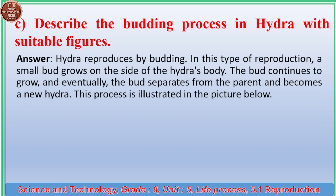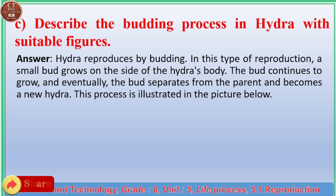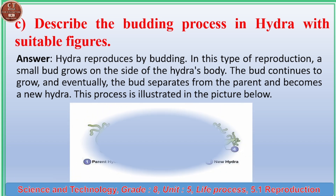(c) Describe the budding process in hydra with suitable figures. Answer: Hydra reproduces by budding. A small bud grows on the side of the hydra's body. The bud continues to grow and eventually separates from the parent, becoming a new hydra. This process is illustrated in the figure.